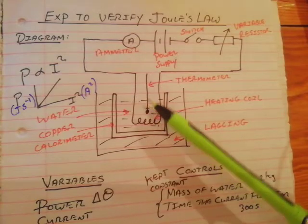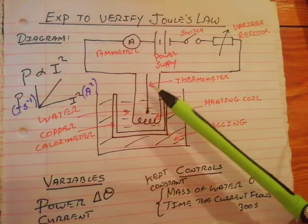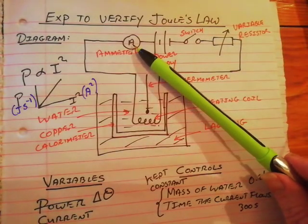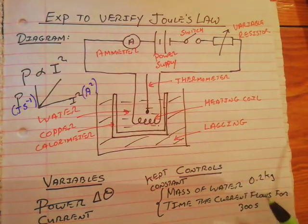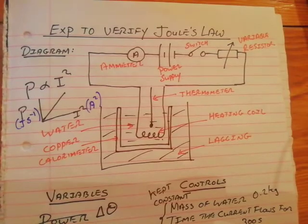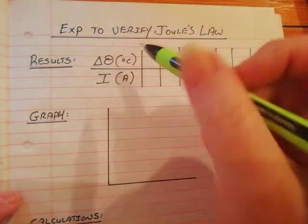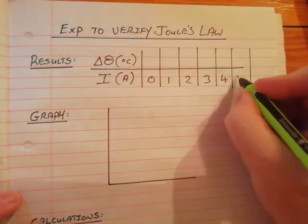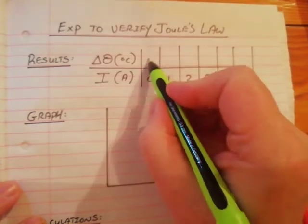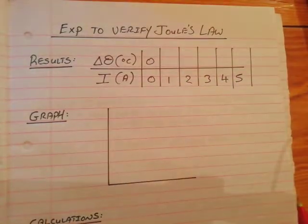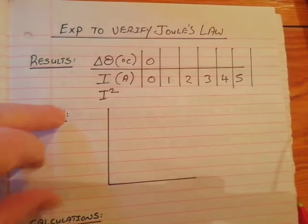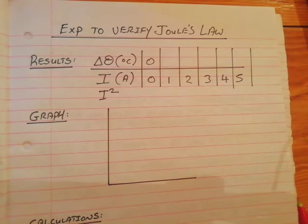You find the rise in temperature for the first current, then increase the current — say from 1 amp to 2 amps — and again find the rise in temperature for that fixed mass of water and fixed time. At the end of the experiment, results will include a row of currents — 0, 1, 2, 3, 4, 5 amps — with corresponding rises in temperature. The current values must then be squared, and you plot a graph of current squared against rise in temperature, taking rise in temperature as a representation of the power of the heating coil.